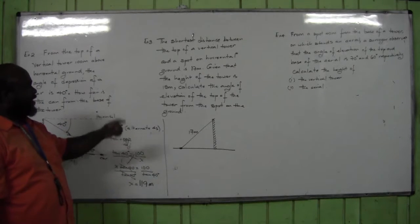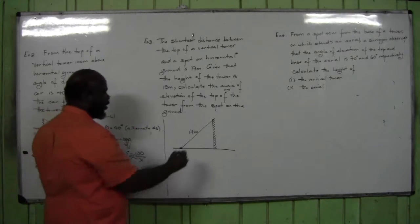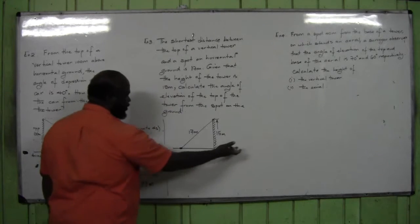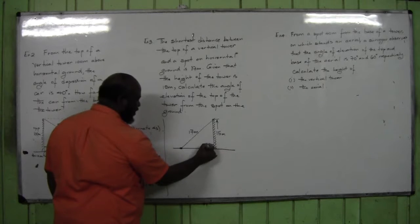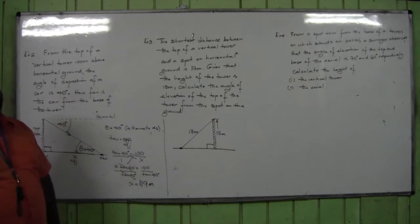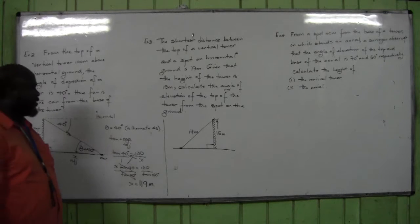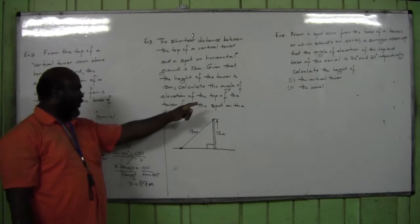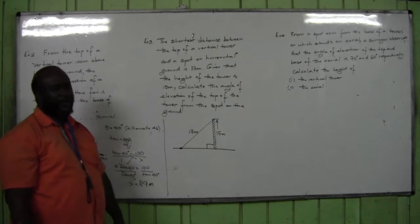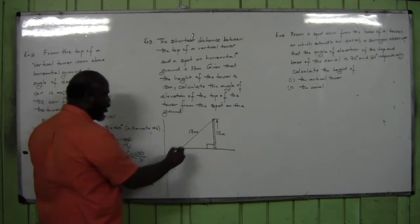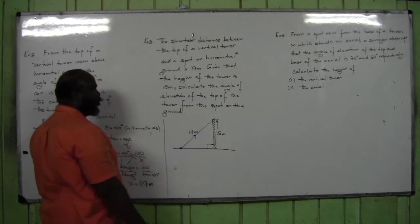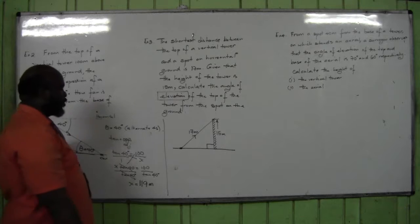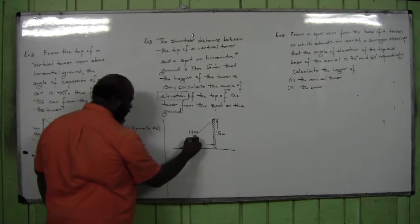We are told the height of the tower is 15 meters. The horizontal ground and vertical tower meet at 90 degrees. They ask us to calculate the angle of elevation of the top of the tower from the spot on the ground. From the spot the person is looking up — we know it's looking up because the question says elevation. This angle of elevation is theta.